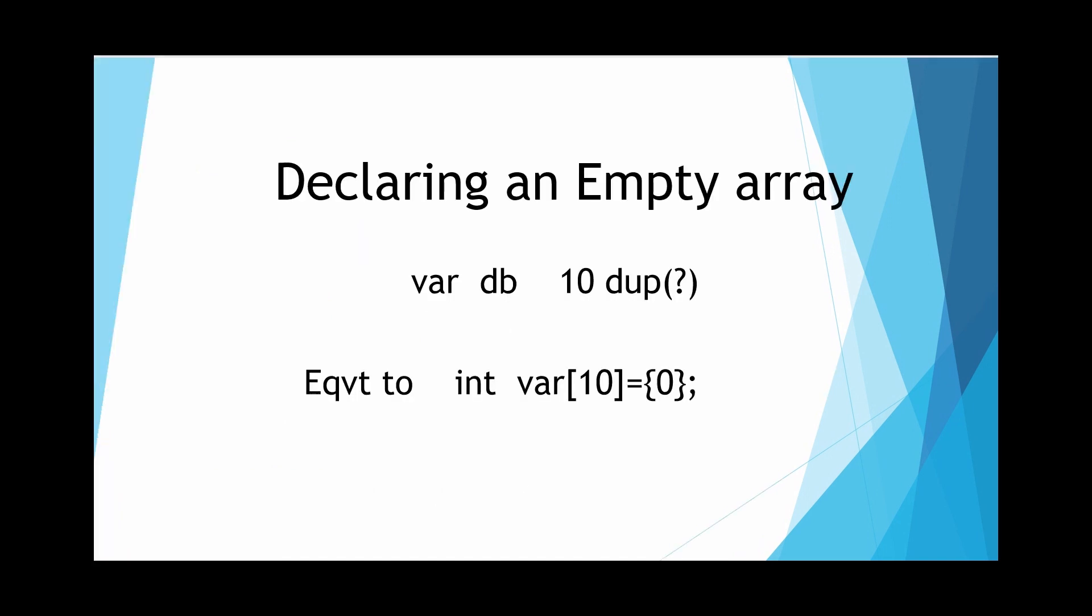What if in certain conditions we need to declare an empty array? Like in C, we have an array where we are allocating ten spaces, initializing each value with zero. We can do the similar operation in 8086 assembly language using DUP operator. This question mark tells the compiler to create duplicate number of spaces and initialize each with zero, so we can later replace those values with different numbers.